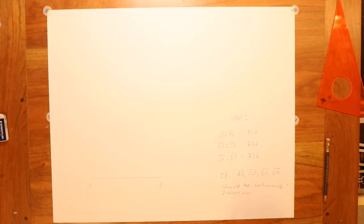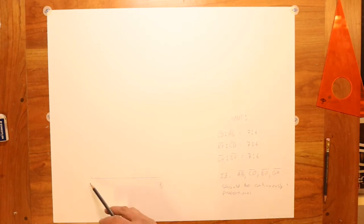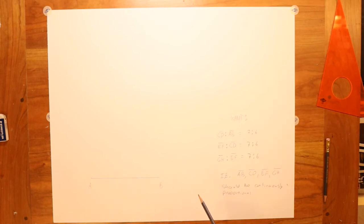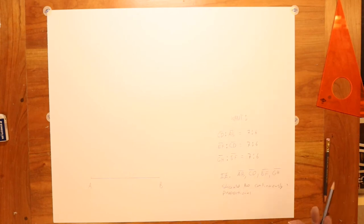This next construction is where we want to construct a sequence of segments that are all continuously proportional — each segment sits in the same ratio with the next as all the others do. I have segment AB and want to construct a new segment CD in a 7 to 6 ratio with it — if AB is divided into 6 pieces, CD should be 7 of those pieces long — and then another segment in the same 7 to 6 ratio with CD, and so on.